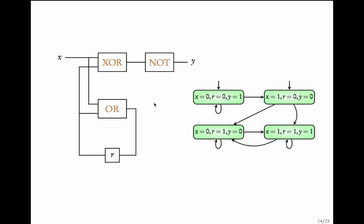This way, given a hardware circuit — which could use other gates like NAND, AND, or OR — you can derive a finite state machine corresponding to it. Note that you could also have more inputs, more registers, and more outputs, and based on their number you can create your transition system.